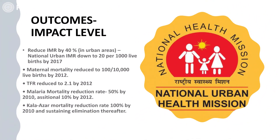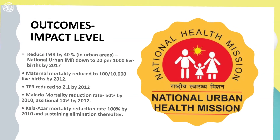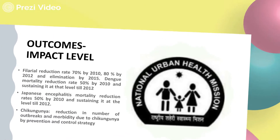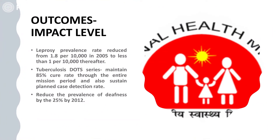Regarding outcomes and impact, the rural health mission was a great success, and the urban health mission followed. Through this mission, the government targets reducing mortality from several diseases such as malaria, kala-azar, Japanese encephalitis, and tuberculosis. The mission has been highly successful in eradicating diseases including leprosy, tuberculosis, chikungunya, and malaria. Leprosy prevalence has been reduced greatly with the development of DOT centers across urban populations, and tuberculosis has been highly controlled.